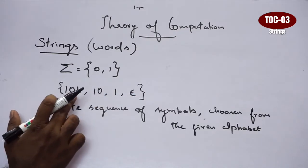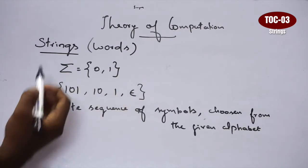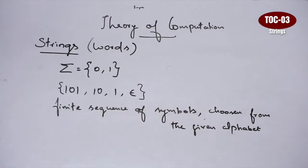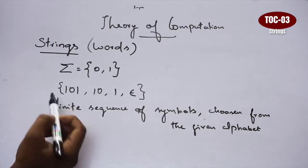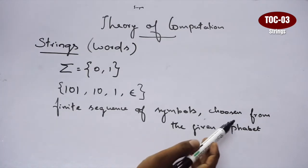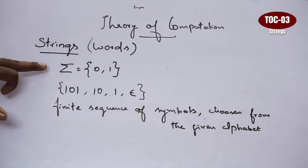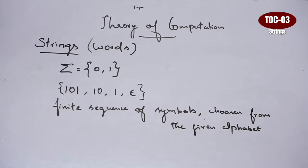Here we use some sample strings. We use this definition: a finite sequence of symbols — there is a finite number of symbols — like a finite sequence of alphabets chosen from the given alphabets. If we use alphabets, we use strings to form all the strings.